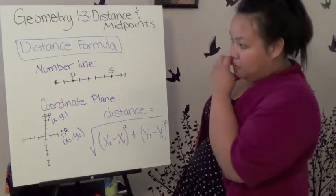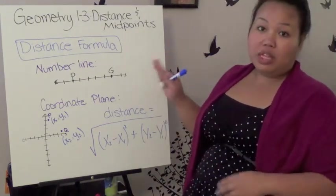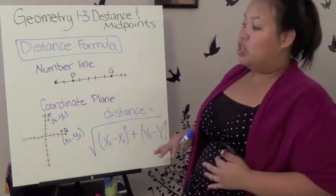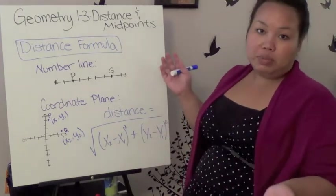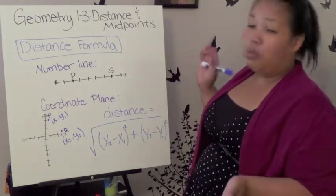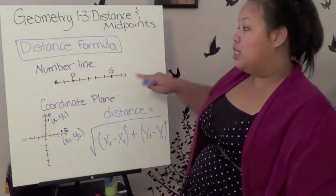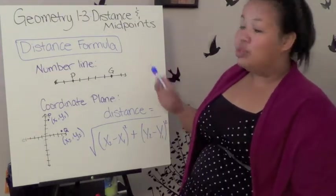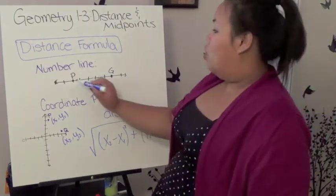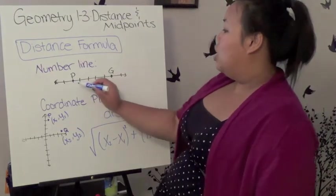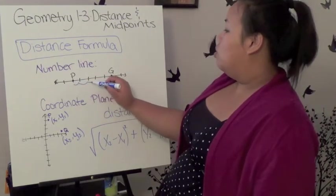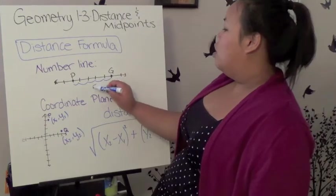Your first one is the distance formula. Basically, these formulas are here to help you figure out how to find the distance between two points. It's very easy to find it on a number line because all you need to do is count. So basically, in order to find the distance between P and Q, it's 1, 2, 3, 4, 5. So 5.